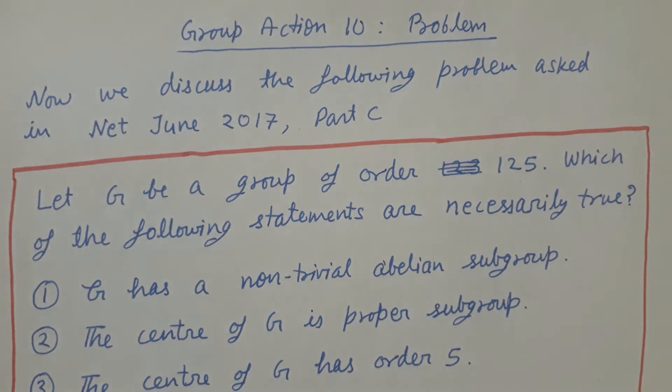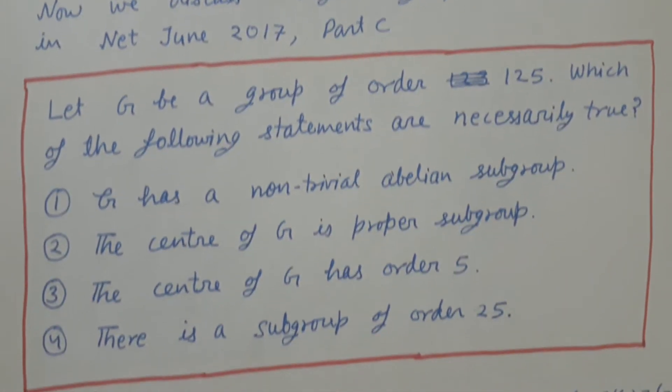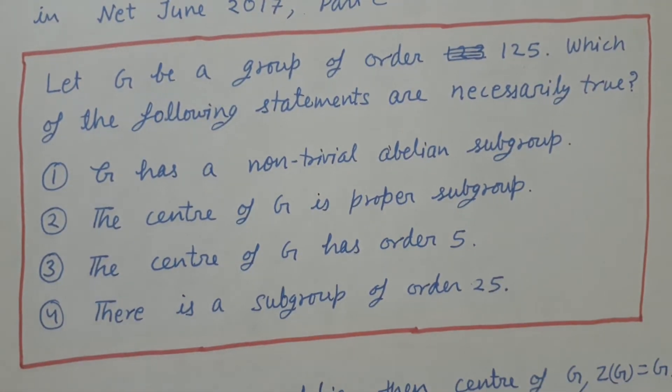The problem is: Let G be a group of order 125. Which of the following statements are necessarily true? First, G has a non-trivial abelian subgroup. The center of G is a proper subgroup. The center of G has order 5. There is a subgroup of order 25 in G.